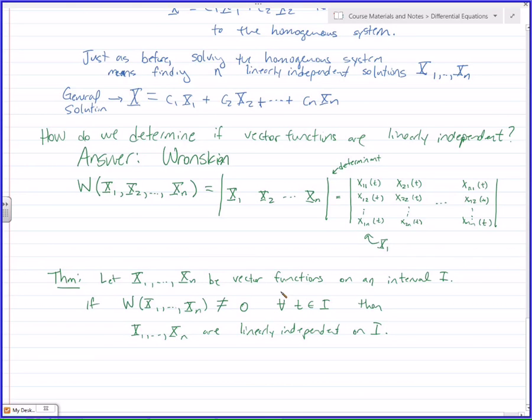Student asks about notation. So every t in the interval i. This means for every, as an element of. You should have seen that before, because that's just basic set notation from algebra. Is an element of this interval i. If the interval is from a to b, then t is somewhere between a and b. As long as it's true for everything on that interval, it's linearly independent.